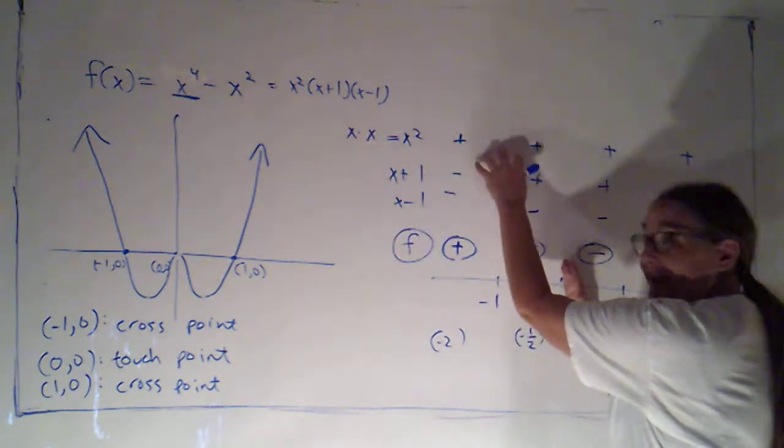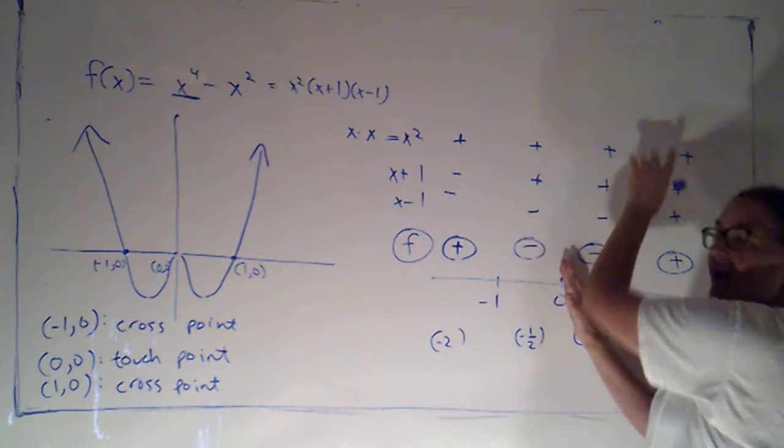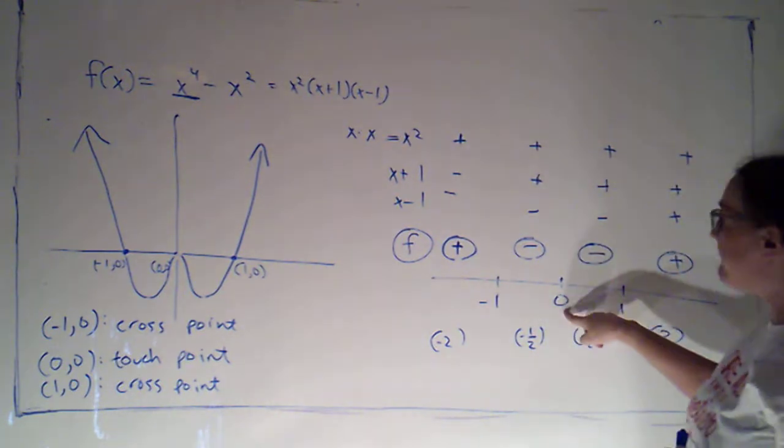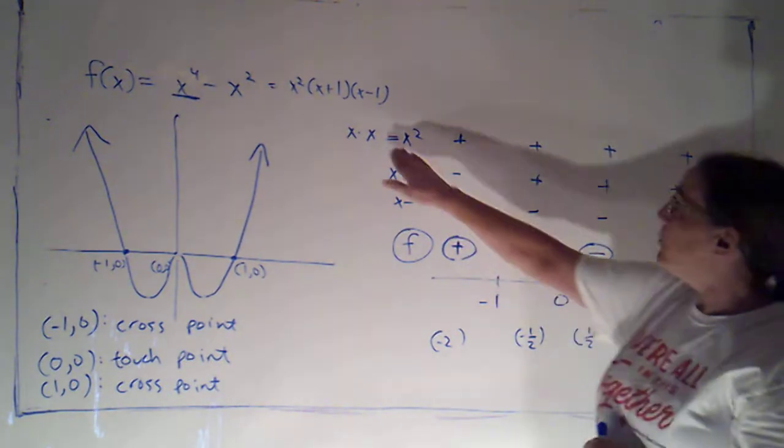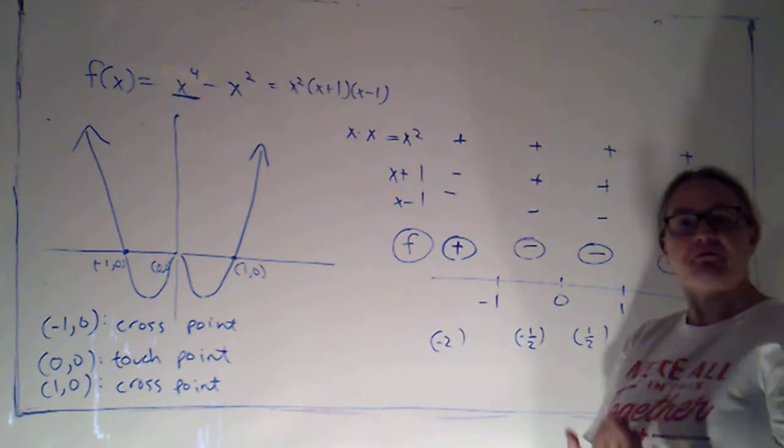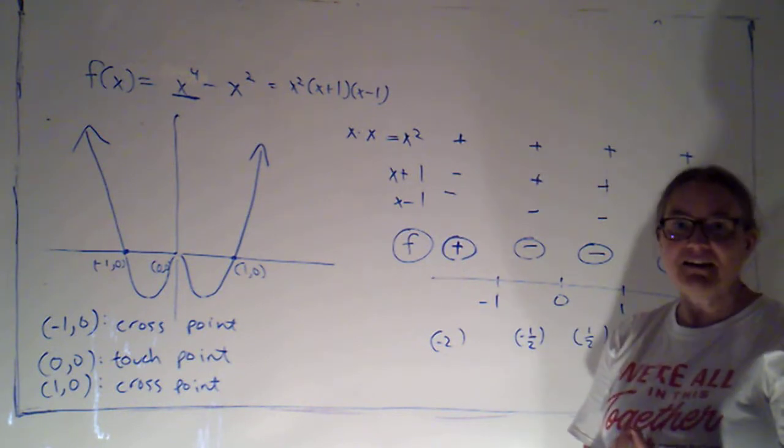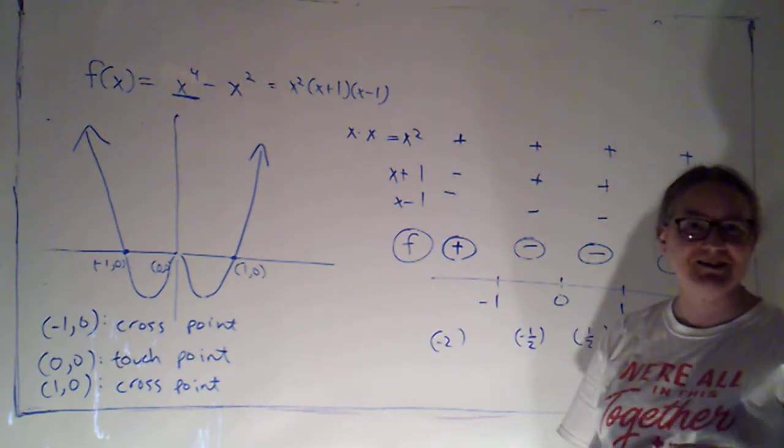So I had two negatives, which make a positive. And then I had two positives that make a positive. So because the factor associated with this zero was repeated two times, it didn't make a difference if that factor changed sign, because it was going to give me two sign changes that would cancel each other out.